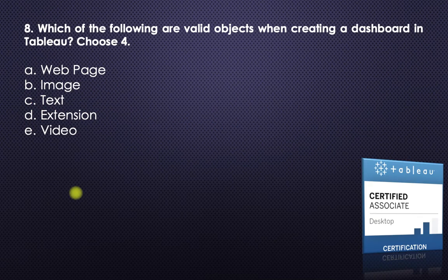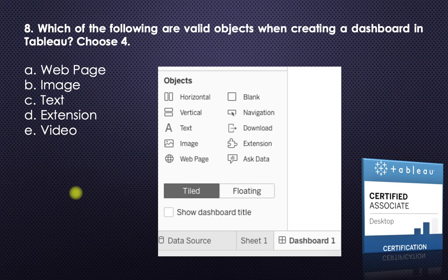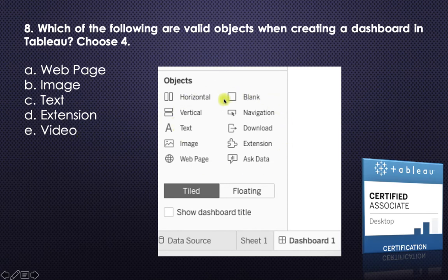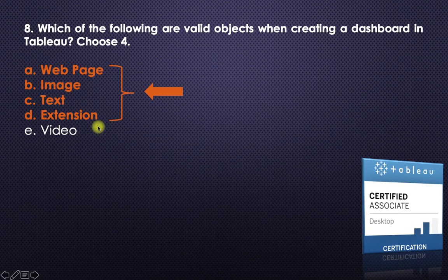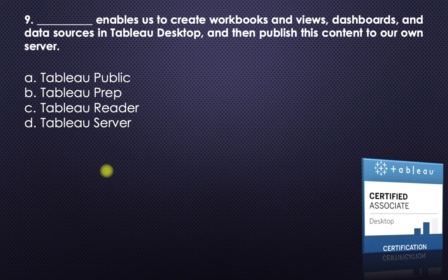Question eight: which of the following are valid objects when creating a dashboard in Tableau? Choose four. When you come to the dashboard, you can see the available objects: web page, image, text, and extension. There is no video option here. So video is not a valid dashboard object — the other four are valid objects and they are the answer.